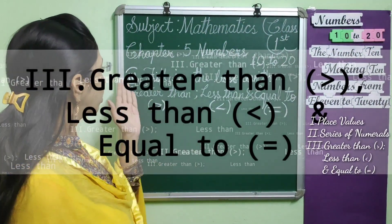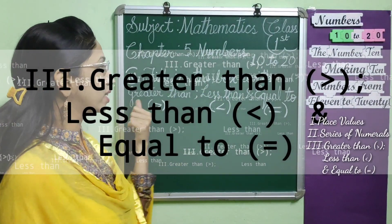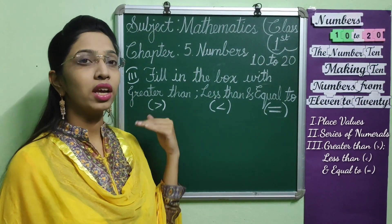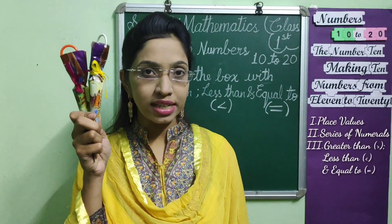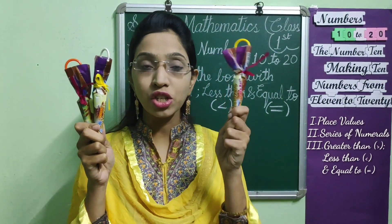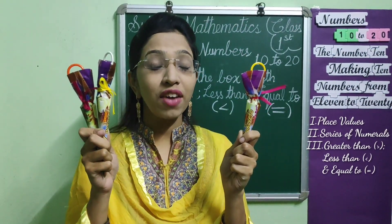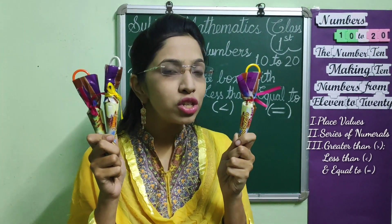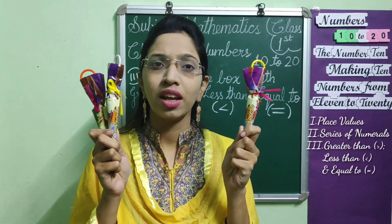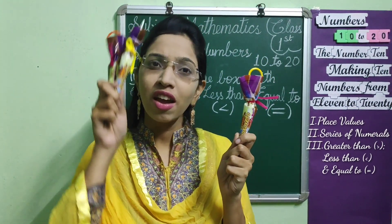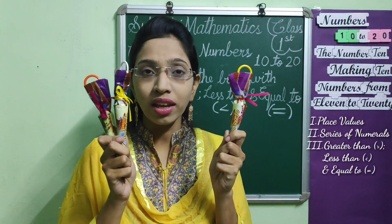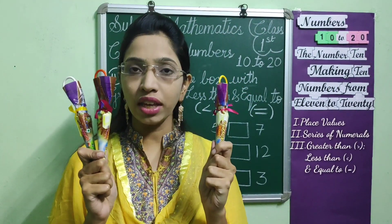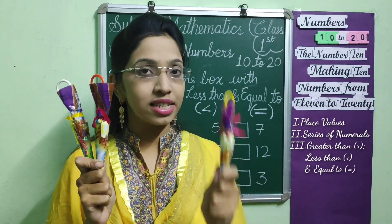Now we will go for the third topic — fill in the box with greater than, less than, and equal to. Before going to this topic, think about this: if there are two chocolates in my right hand and one chocolate in my left hand, and I say you to choose from one hand, which one will you choose? Of course, you will choose my right hand, because I have more chocolates. So, here we can say 2 is greater than 1.